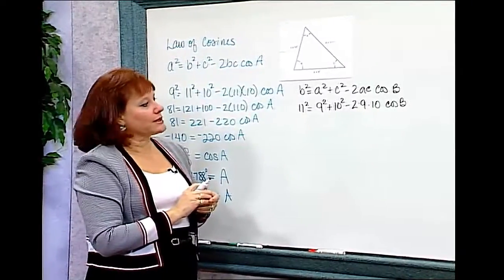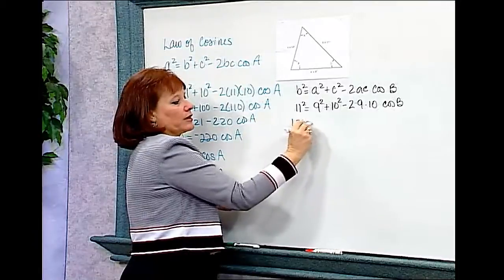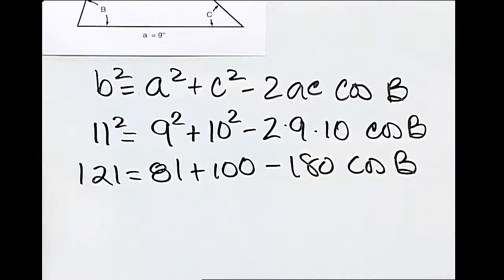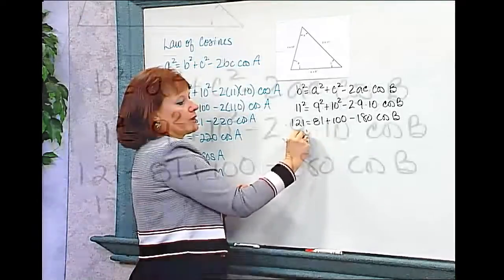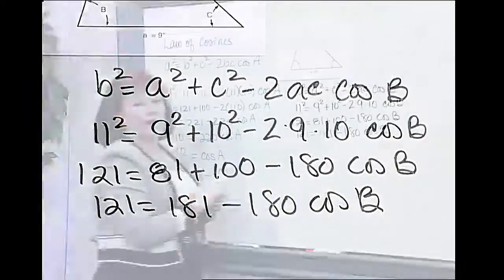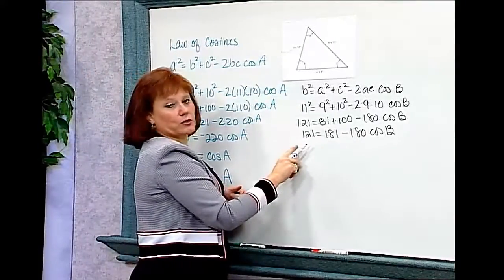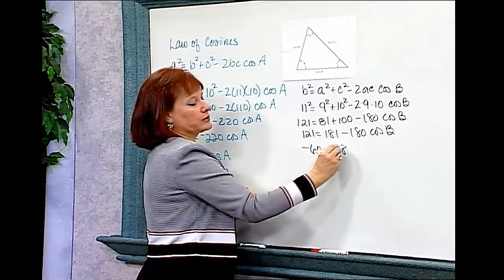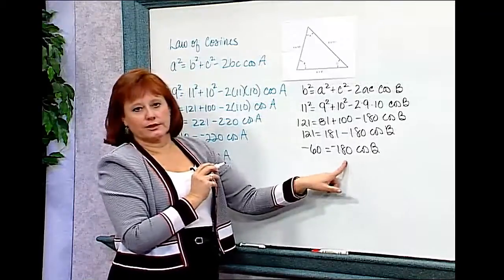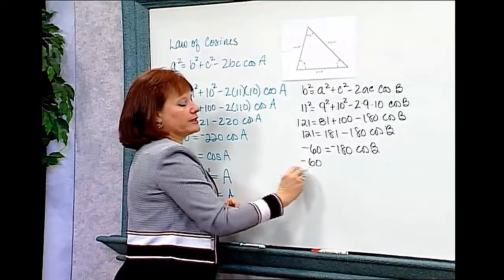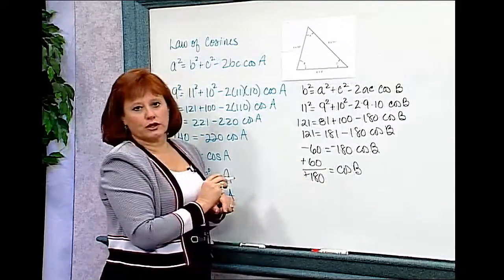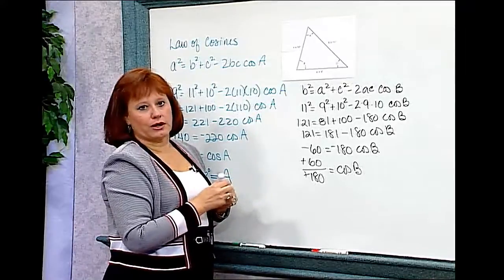I'm going to have to use my algebra skills again. I have 121 equals 81 plus 100 minus 180 cosine B. Simplifying: 121 equals 181 minus 180 cosine B. To get B isolated, I subtract 181 from both sides and get negative 60 equals negative 180 cosine B. Then I divide both sides by negative 180, so I have negative 60 over negative 180 equals cosine B. Again, a negative over a negative gives a positive, and I'll cross to my calculator.